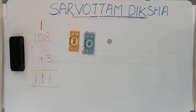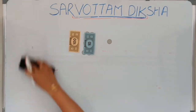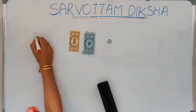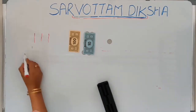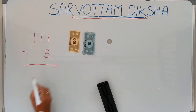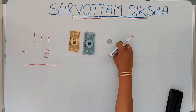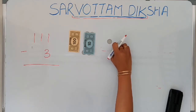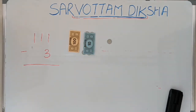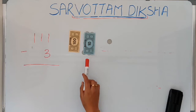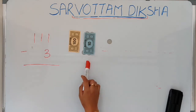Now let's see the concept of subtraction in this example only. This number is 111 and I have to subtract 3 from it. Can I take 3 ones from here? No. But it is available within the system. Now I will go to the tens place and say, can you lend me some ones? Because I have to subtract 3 ones — but tens will say, I can't give you exactly 2 ones.